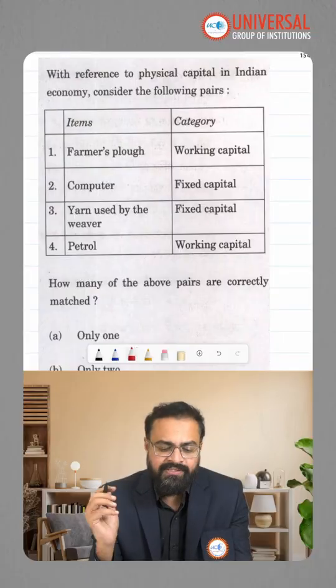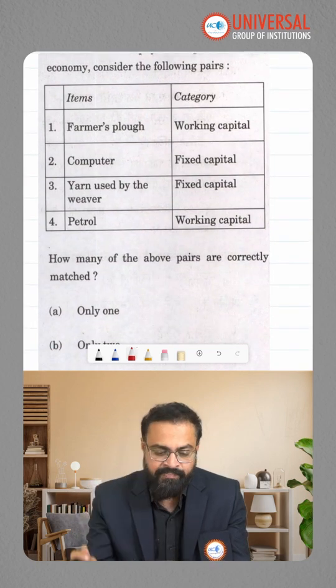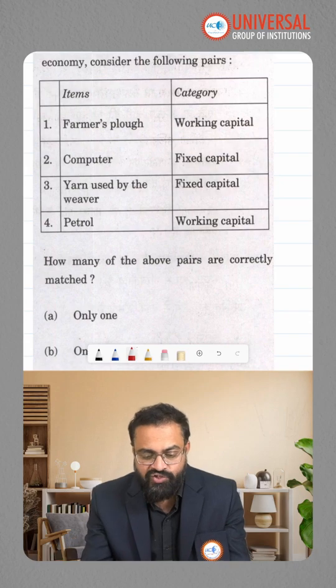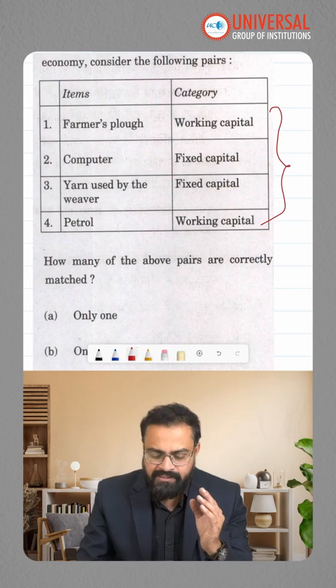Now in this today's session, with reference to the physical capital in Indian economy, consider the following pairs. Items are given in one section and another one happens to be the category. They are asking which of these happens to be the working capital as well as the fixed capital.